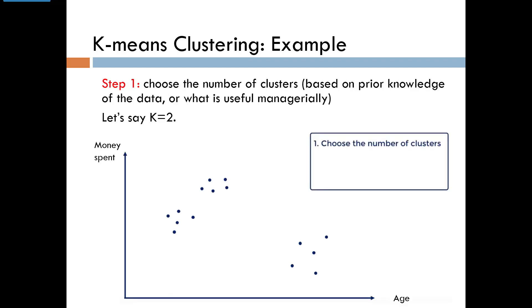K-means clustering proceeds in a stepwise manner. In step 1, choose the number of clusters you want. This could be based on your knowledge of the data or what is useful from a managerial perspective. Let's say K equals 2.